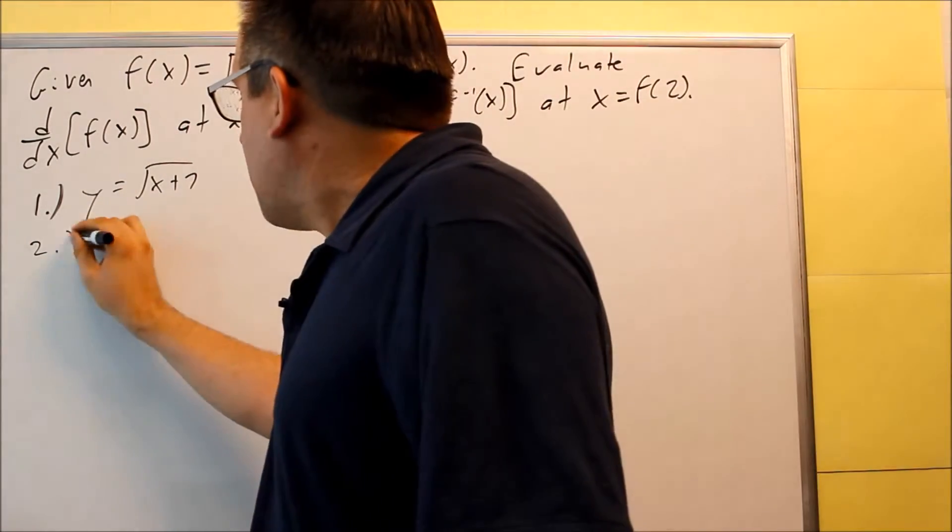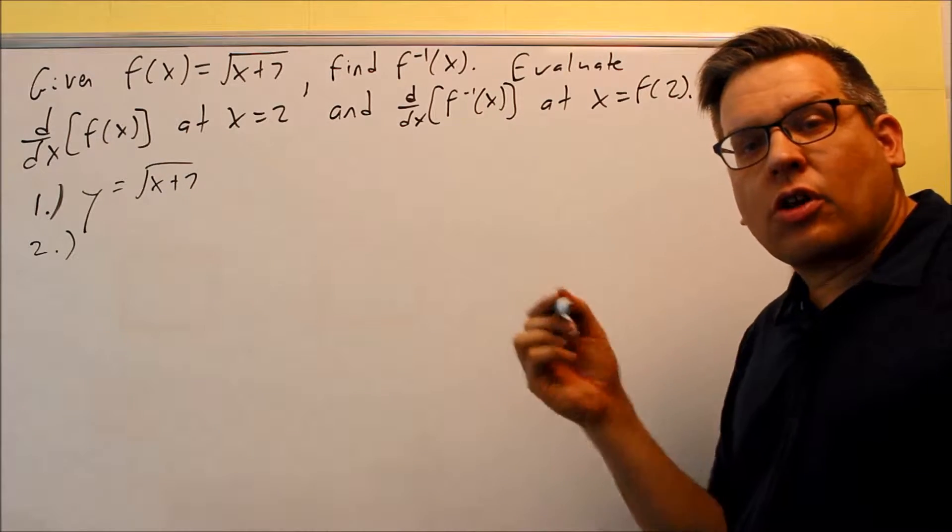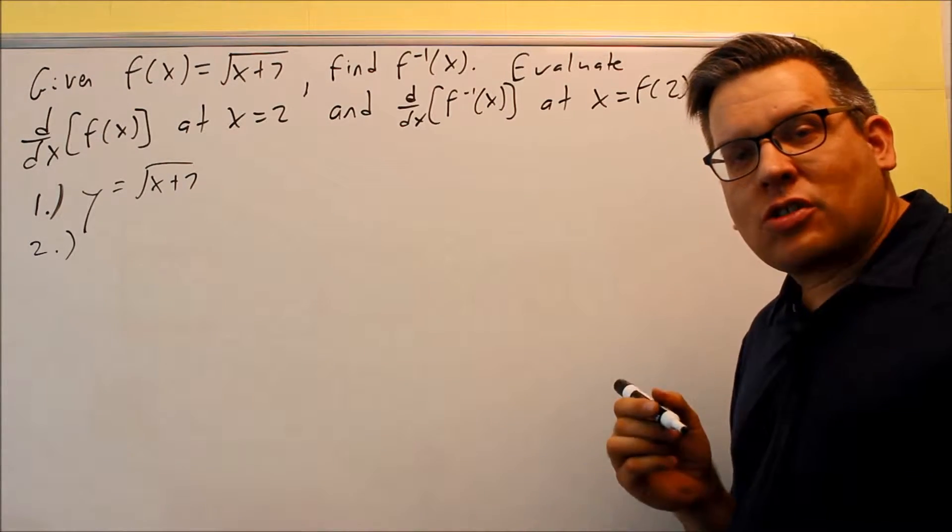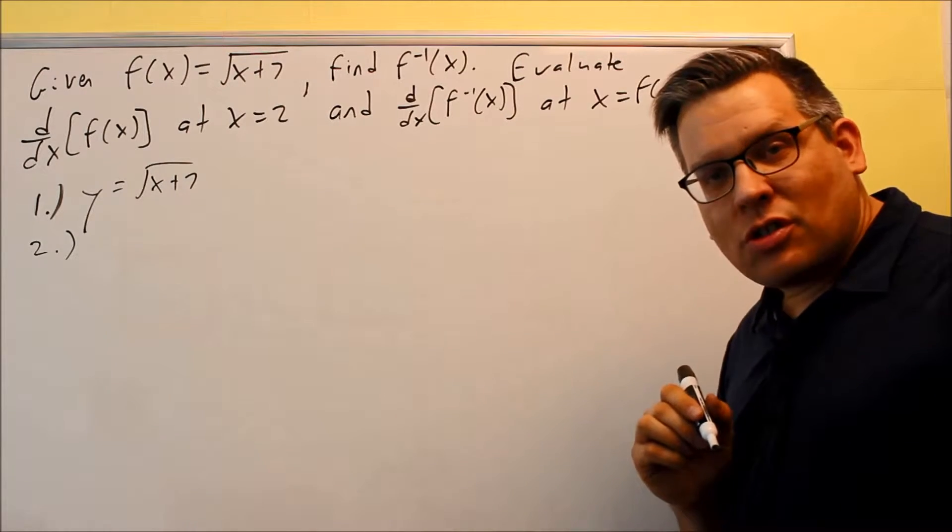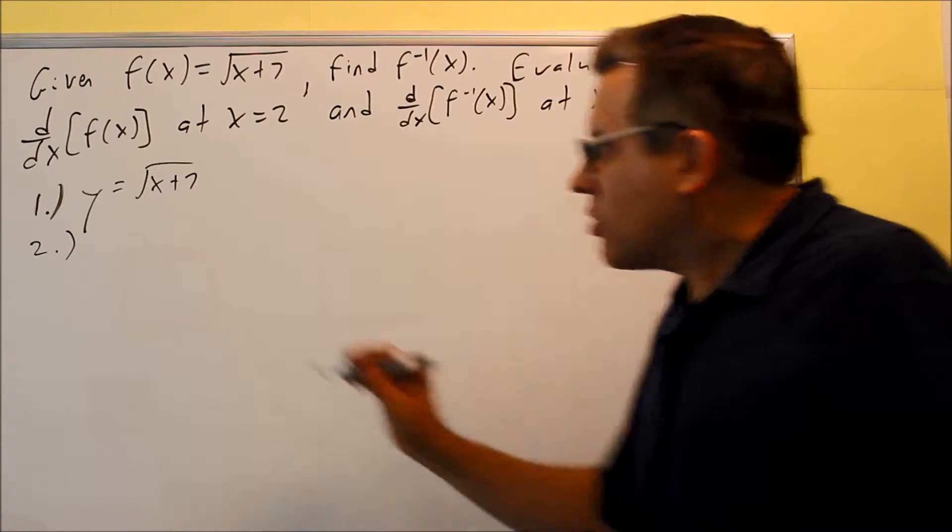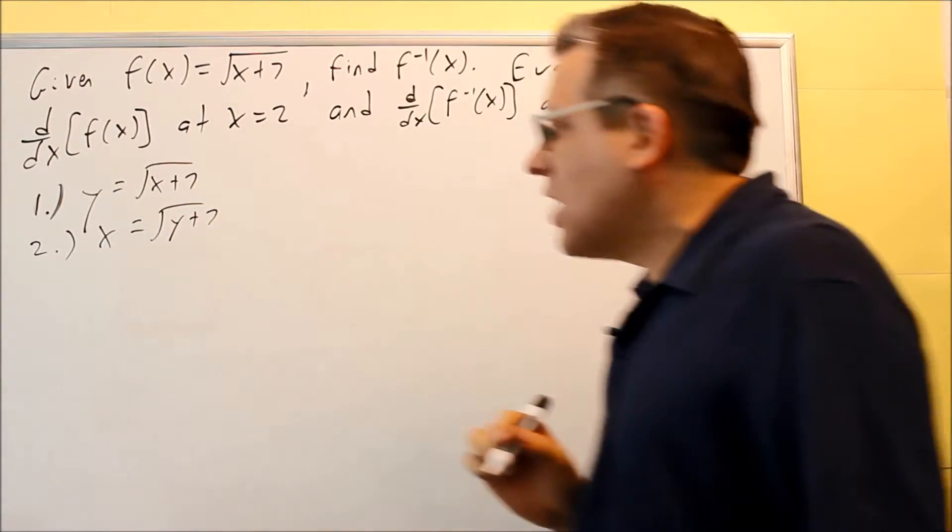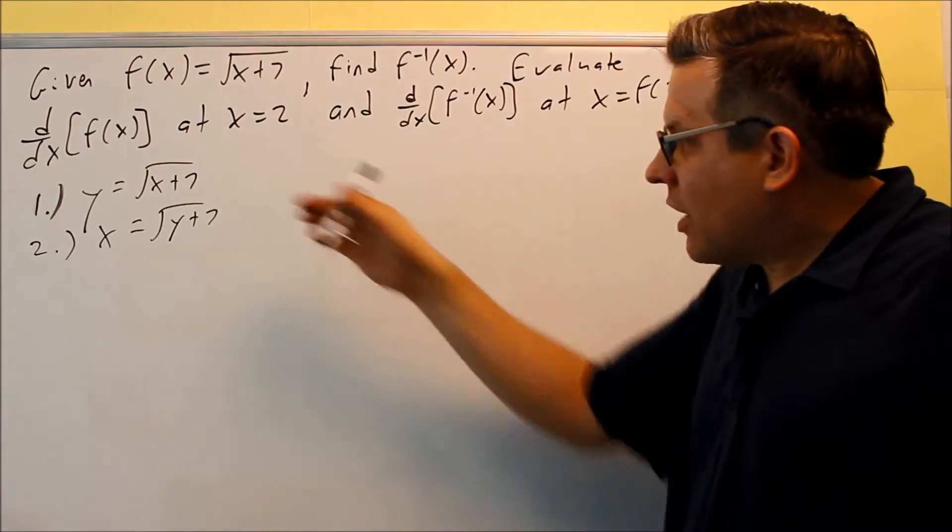Number two is the important step. With inverses, we talked about this in a previous video when we looked at the graph of inverses. We mentioned that x and y switch. So in step two, you switch the x and the y: x equals the square root of y plus 7.